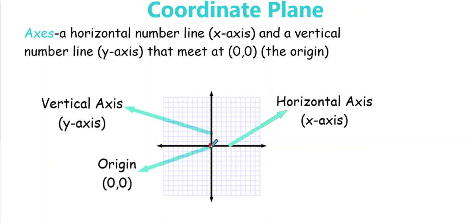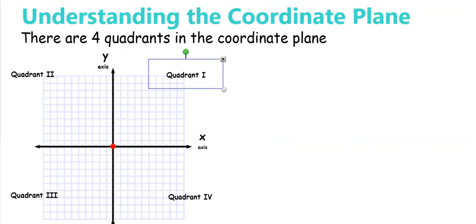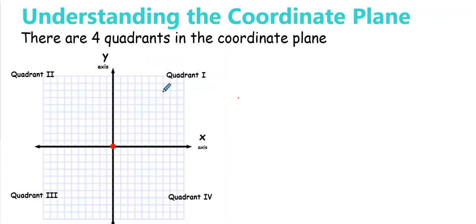We can graph points on the coordinate plane, or we can also identify points. The one thing you need to know — and this is on your notes — when you use these axes it breaks the plane into four different parts. These are called quadrants. This is quadrant one, and on your notes it says label them. We label them with Roman numerals.